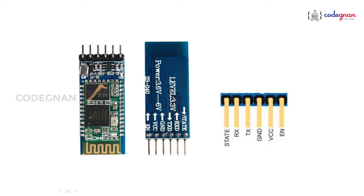Bluetooth can act as slave and master modes. By default, our Bluetooth is in slave mode. It also works as TTL — Transistor-Transistor Logic — using serial communication to upload our program. It follows the IEEE 802.15.1 standard, which helps while communicating with other devices.